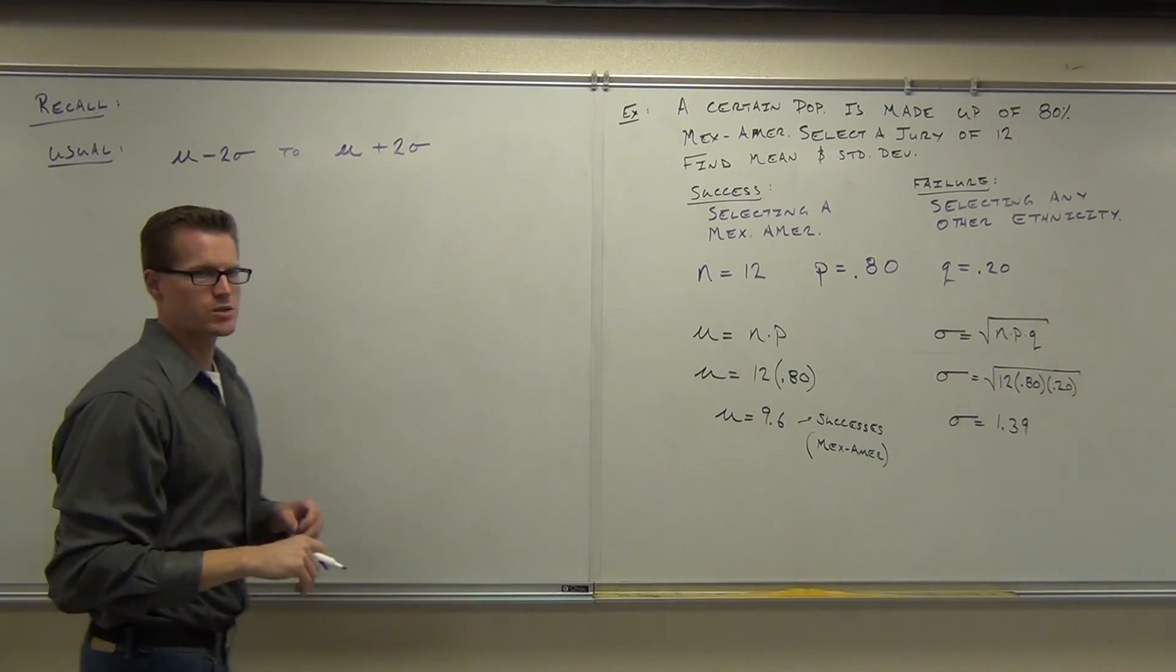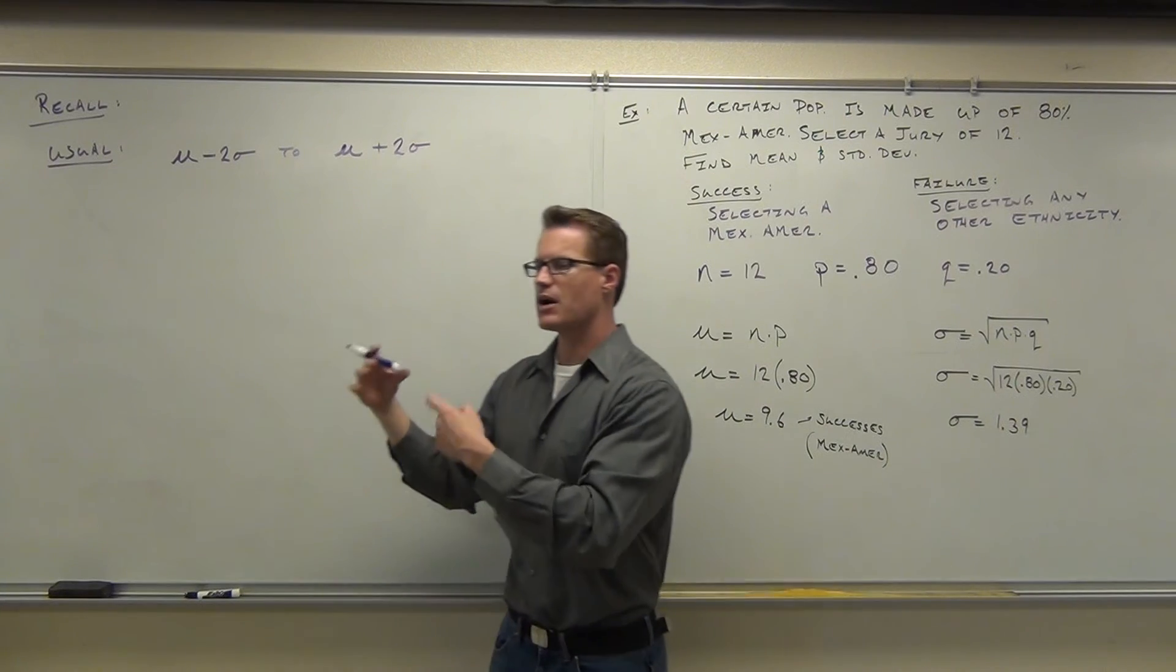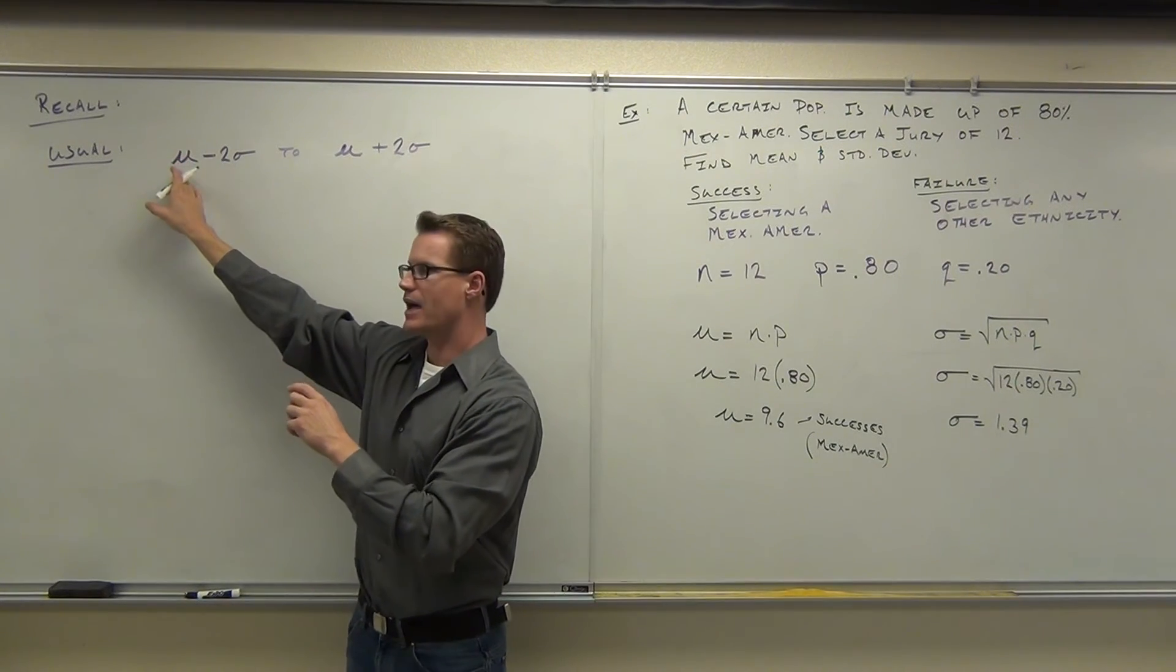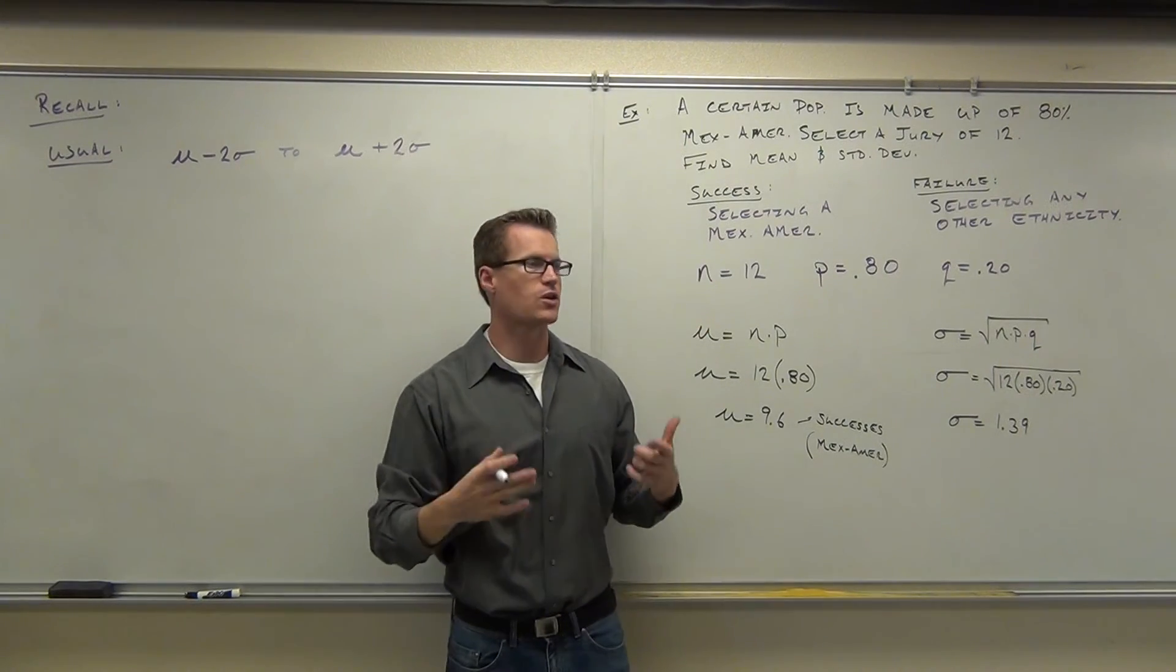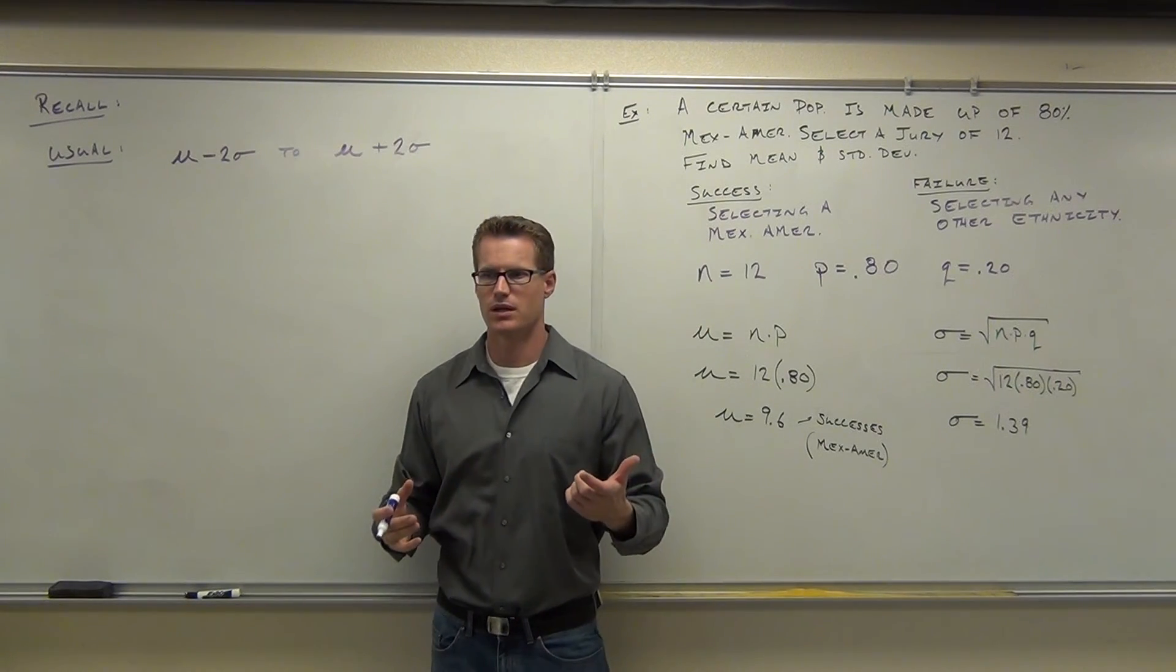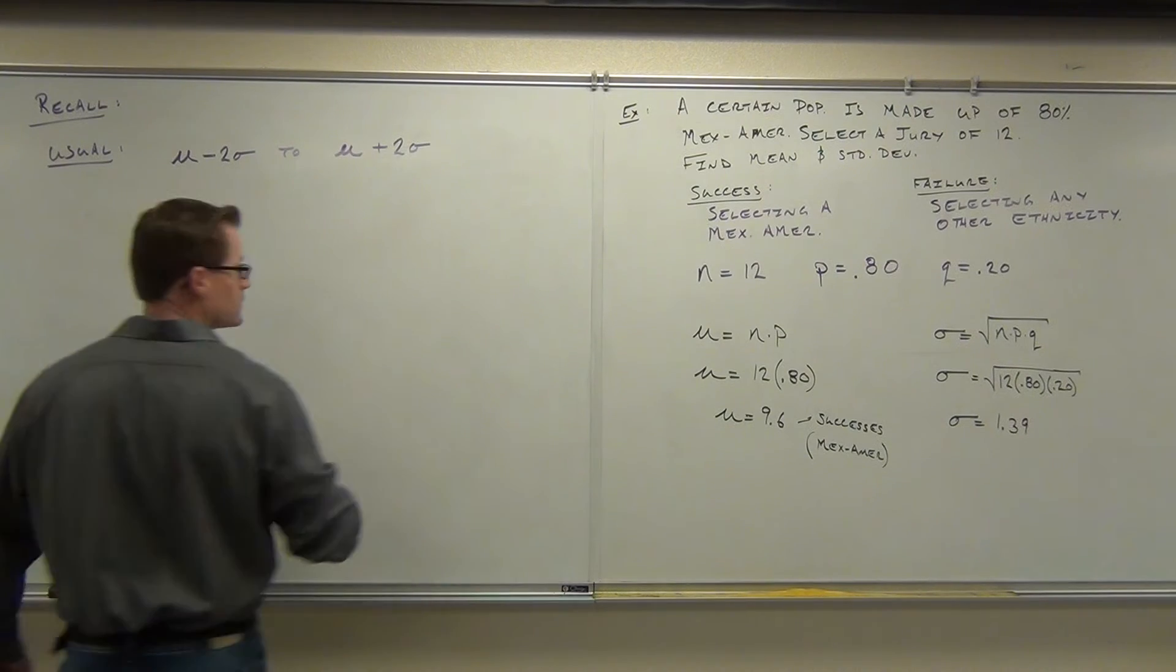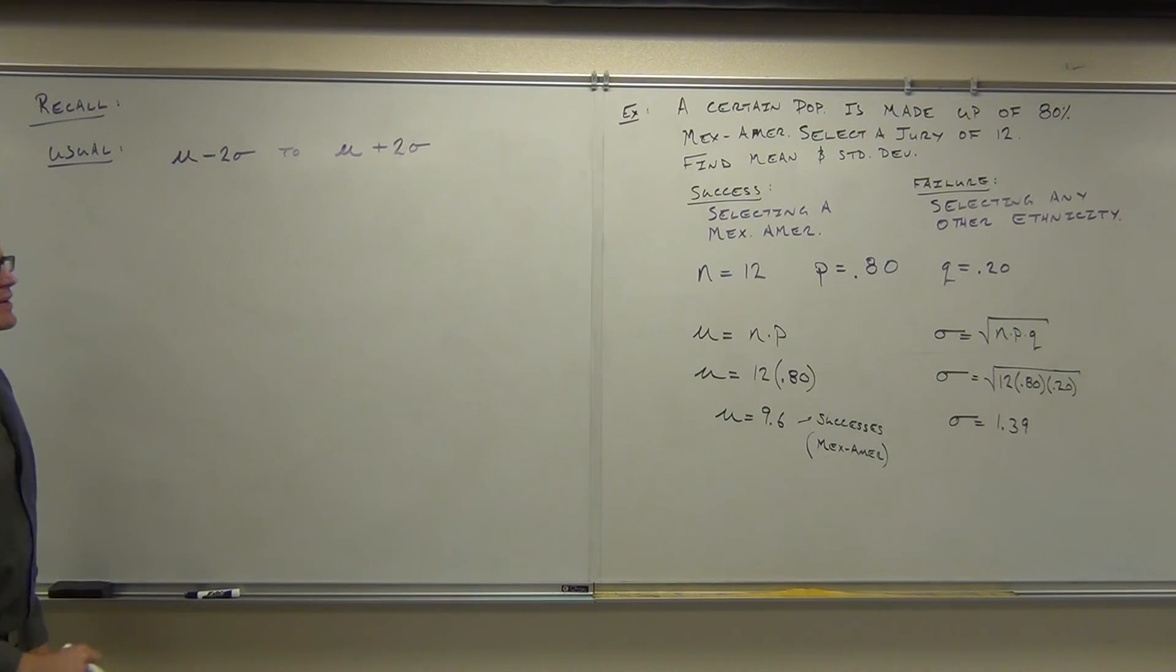Usual would be the mean minus two standard deviations to the mean plus two standard deviations. We've done this several times. This is how we figure out the lower range. We take the average minus two standard deviations and the upper range mean plus two standard deviations. Let's go ahead and do that. Our mean is 9.6. Our standard deviation is 1.39.